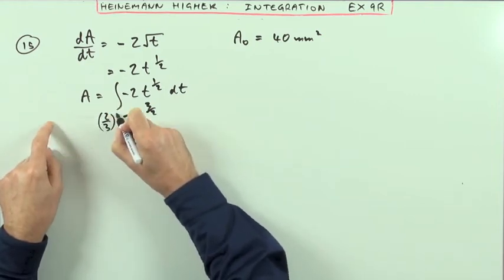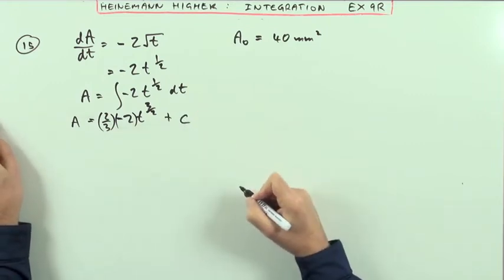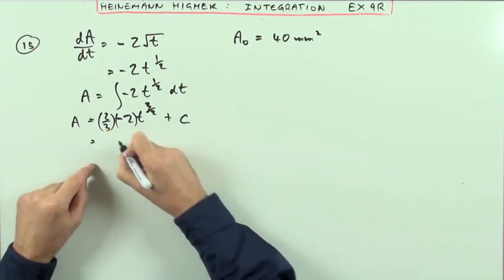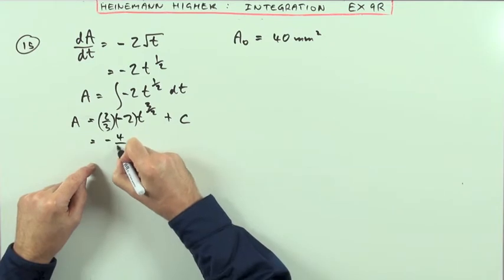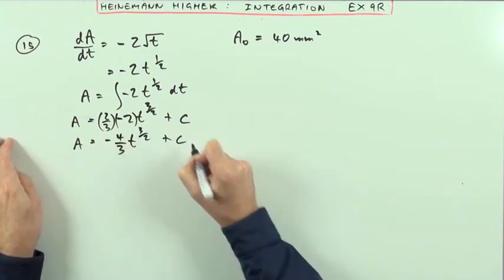So 2/3 times that, so A is going to be that, but there could be some constant here. I'll just tidy this part up. So far I've got -4/3 t^(3/2) + C.